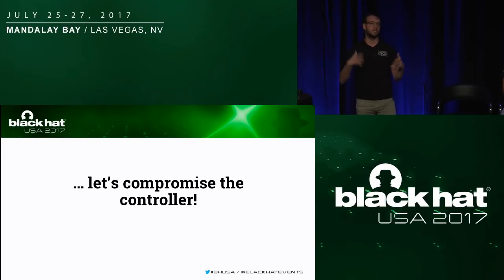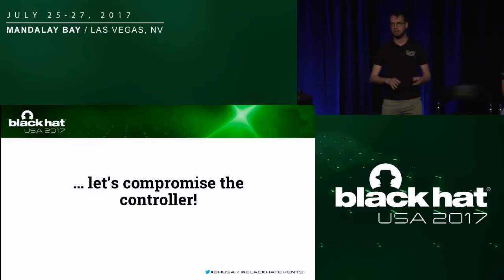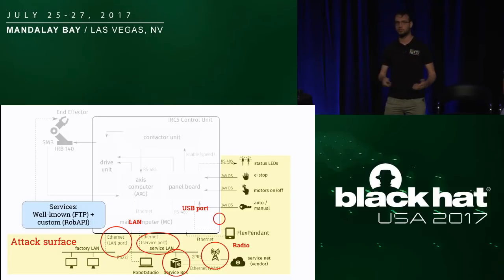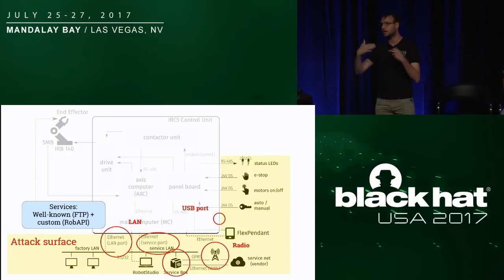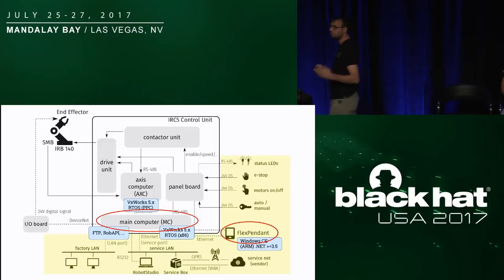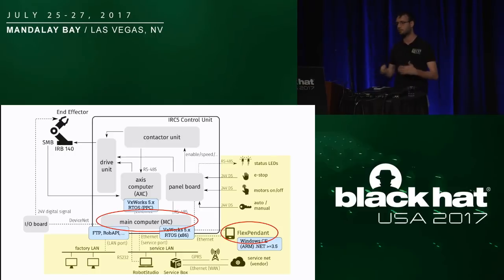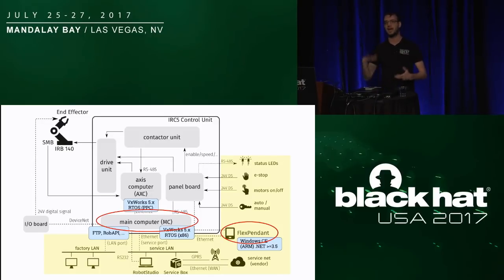We didn't perform a complete vulnerability assessment — our goal was to implement the attacks explained before. All the vulnerabilities I will explain have been fixed or mitigated by ABB. The main component of the robot controller that exposes the most attack surface is the main computer. It exposes a lot of network services and is the gateway between the external world and the controller. From a technical standpoint, the main computer is an x86 system running a real-time operating system: VXWorks.